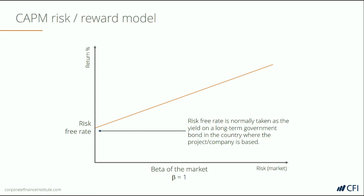We can then look beyond that and draw a line at the level of risk where the market is. This is where a company would have a beta of one — the market level of risk. As you can see, the orange line slopes up to the right, which indicates that as return increases, so does risk.